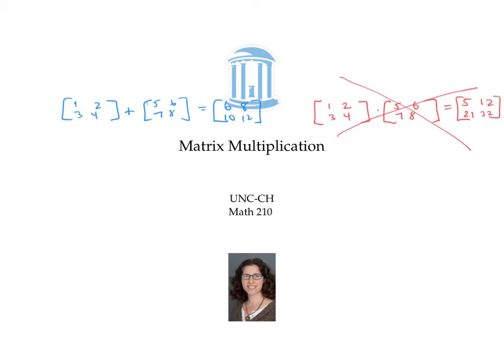One reason we want to define matrix multiplication in this more complicated way is that when we use matrices to represent transformations or changes in a system, then applying two transformations one after the other will exactly correspond to multiplying two matrices in the way I'm going to show you. This will allow us to use matrix arithmetic to model complex systems over time.